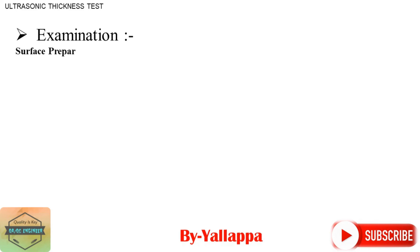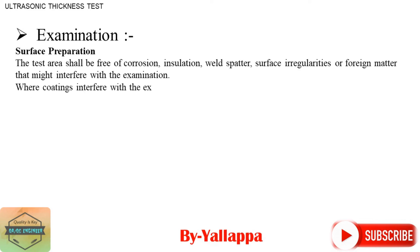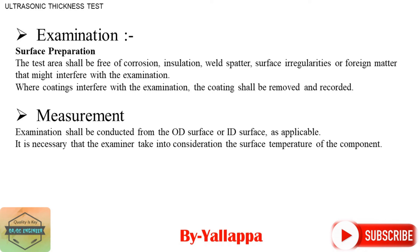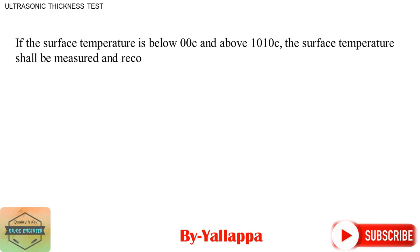Examination Surface Preparation: The test area shall be free of corrosion, insulation, weld spatter, surface irregularities, or foreign matter that might interfere with the examination. Where coatings interfere with the examination, the coating shall be removed and recorded. Measurement examination shall be conducted from the OD or ID surface as applicable. The examiner must take into consideration the surface temperature of the component. If the surface temperature is below 0°C or above 101°C, the surface temperature shall be measured and recorded.